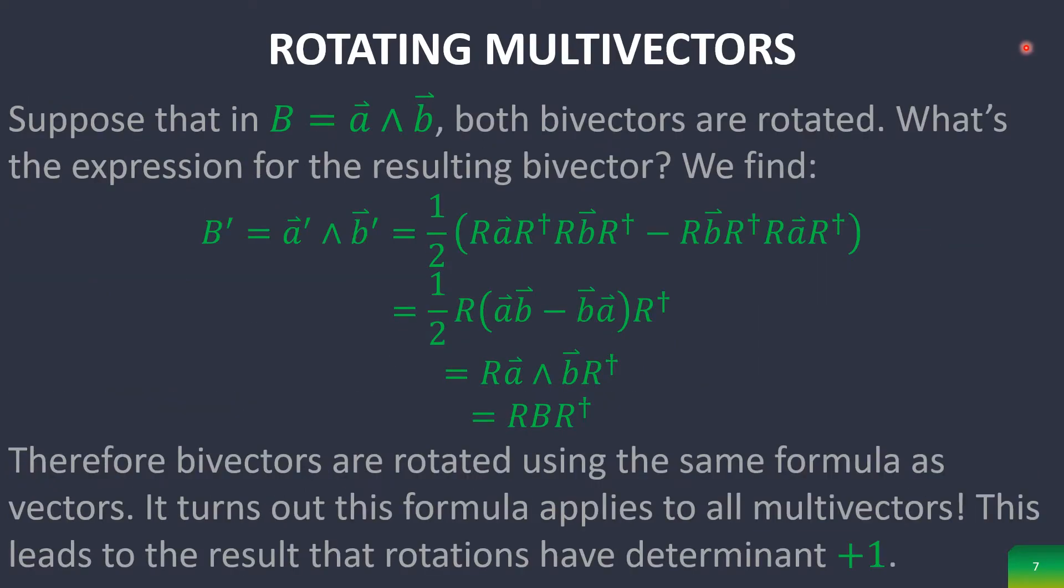Now for rotating multivectors, suppose that bivector B is equal to A∧B and then you rotate both vectors. What's the expression of the resulting bivector? We find that we use the same exact equation and so it turns out that this formula actually applies to all multivectors for rotating them.